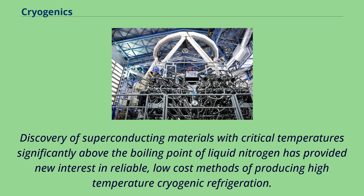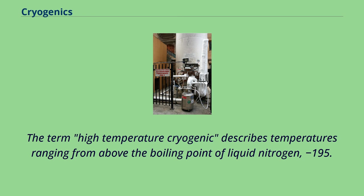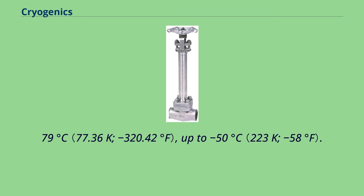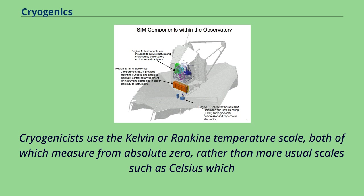Discovery of superconducting materials with critical temperatures significantly above the boiling point of liquid nitrogen has provided new interest in reliable, low-cost methods of producing high-temperature cryogenic refrigeration. The term 'high-temperature cryogenic' describes temperatures ranging from above the boiling point of liquid nitrogen, minus 195.79 degrees Celsius, up to minus 50 degrees Celsius. Cryogenics uses the Kelvin or Rankine temperature scale, both of which measure from absolute zero.